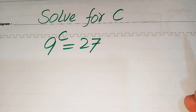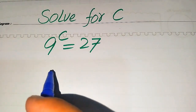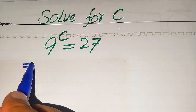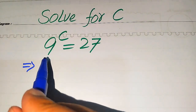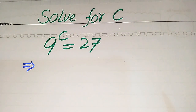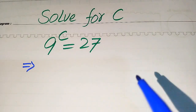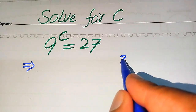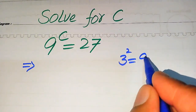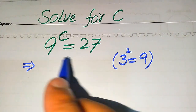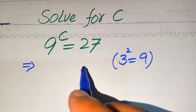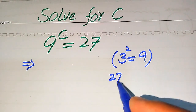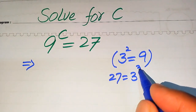The very first thing we are going to do is write the base on the left hand side in factorized form. We know that the factors of 9 are 3 squared, so 3 squared equals 9. We also know the prime factors of 27: 27 equals 3 cubed.